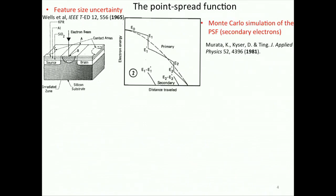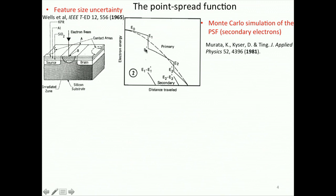Going forward, there was some interesting work on simulating the point spread function, which is the energy density deposited in the resist. In this work from Murata and Kaiser, they modeled the electron energy as a function of distance traveled. As the electron travels into the resist, it loses energy. They also modeled a jump in energy from E1 to E1 prime, which means there was a generation of a secondary electron, and they modeled the secondary electron effect on the point spread function.